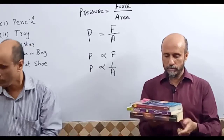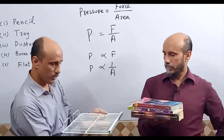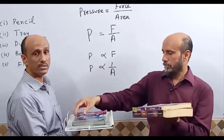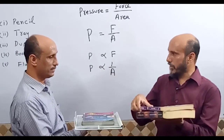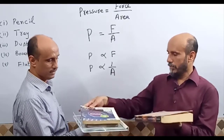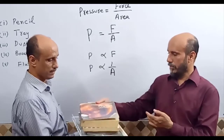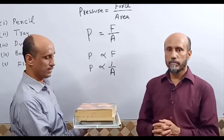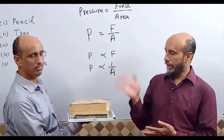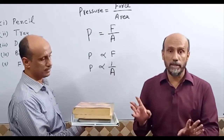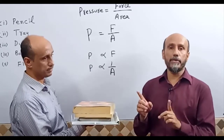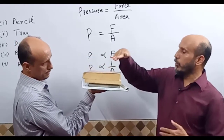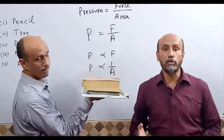Now let's see another demonstration. Can you hold these books? I am holding them. Now place books one by one on my hand to show that force and pressure are directly proportional. As more books are added, the force increases which increases the pressure. Here the area in contact is kept constant, so if area is constant, force and pressure are directly proportional.